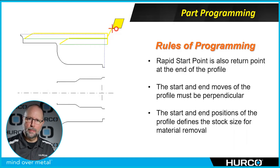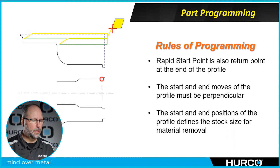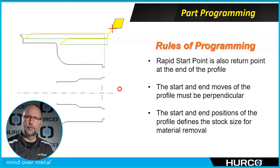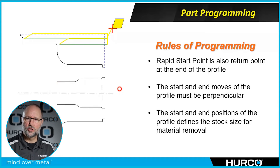The thing to keep in mind about the rapid-to position is it's going to go there at the end of the block as well. So if we were doing a bore on the inside, we rapid to this position at the beginning of the block, then drop down, rough out the bore, finish to this position, and immediately go back to our rapid-to position. On an ID, we want to make sure that rapid position is somewhere out in a safe location in front of the part, but small enough in diameter that we're not going to run into the part when we finish the profile.